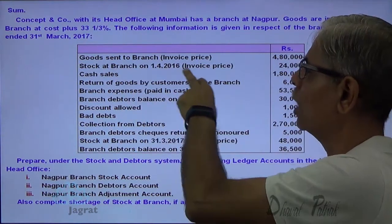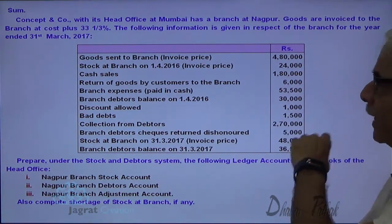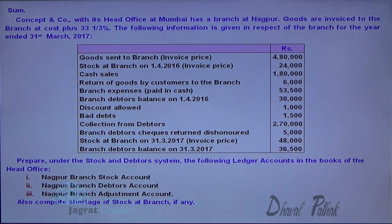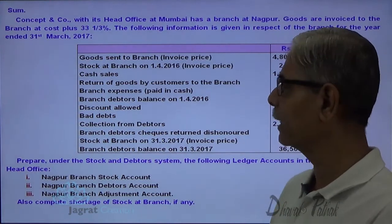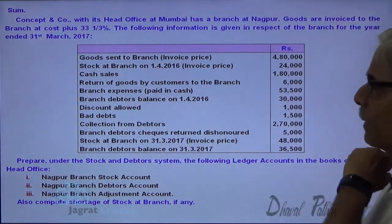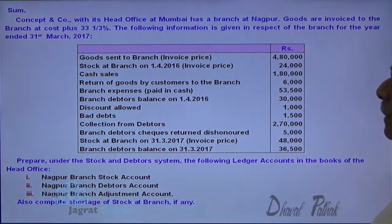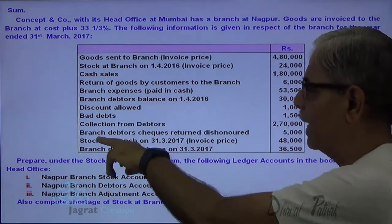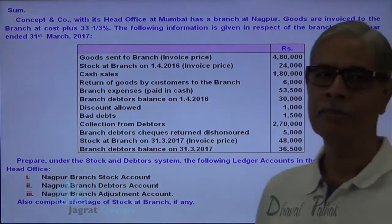Stock at branch on 1-4-2016 is the opening balance, recorded at invoice price. Cash sales, return of goods by customers to the branch — branch stock increases and branch debtors account is to be credited. Branch expenses paid in cash. Branch debtors balance: opening balance, discount allowed, bad debts, collection from debtors, and branch debtors cheque return dishonored.